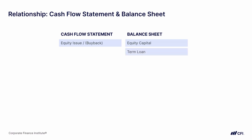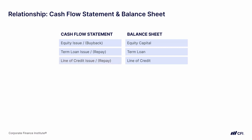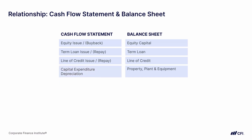Similarly, if we had a term loan on the balance sheet, then on the cash flow statement we would see term loan issuance or repayment. If the balance sheet had a line of credit, on the cash flow statement we would see the line of credit issuance or repayment. These three pairs are relatively straightforward because the labels are so similar. But for property, plant and equipment on the balance sheet, there would actually be two corresponding line items on the cash flow statement: capital expenditure and depreciation. Capital expenditure increases the value of PP&E, while depreciation subtracts from it.